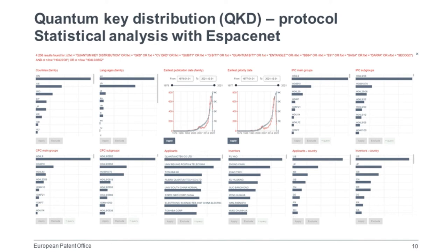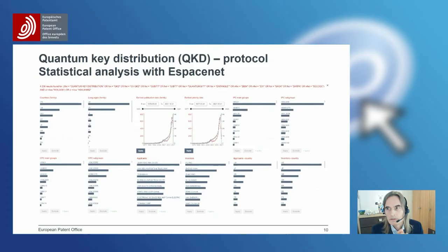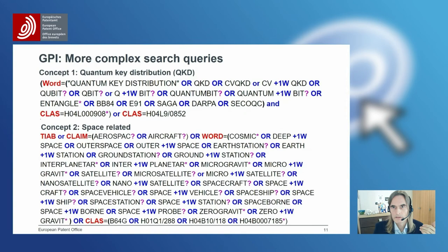Espacenet is good for this kind of analysis but has some limitations with regard to the search query. There are limitations on the number of terms that can be queried against one field — only 10 search terms against one specific field, or a maximum of 20 search terms overall. For analyzing the quantum key distribution area this is fine, but in the quantum technology and space report, we wanted to analyze in more depth which inventions are actually relevant to space. For that concept, Espacenet is a bit difficult to use since we need quite long queries.